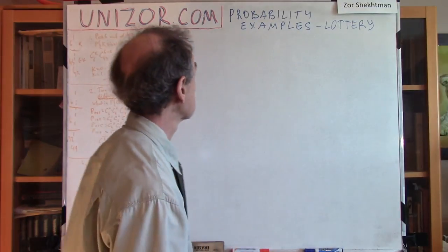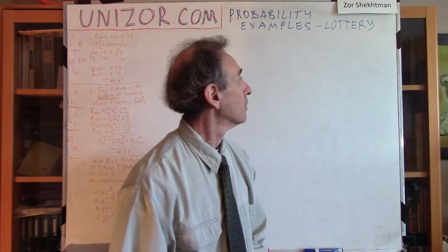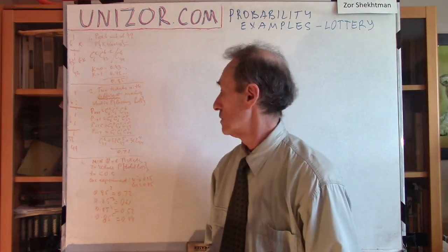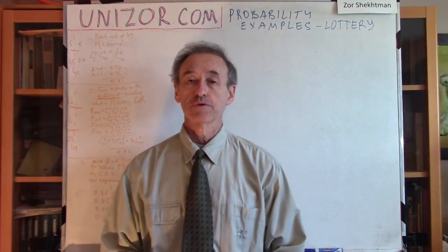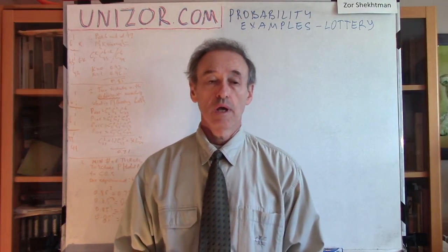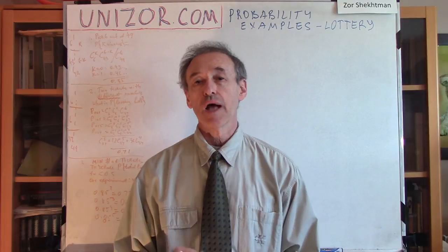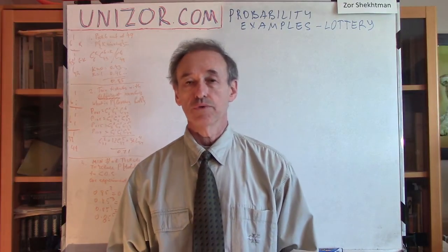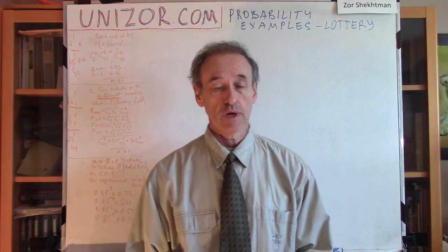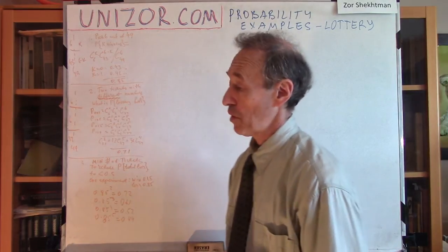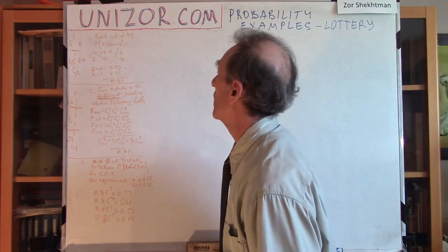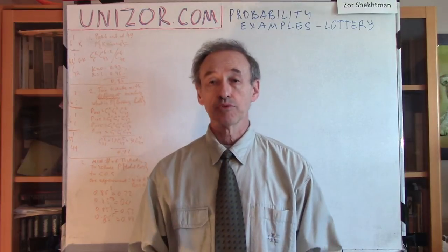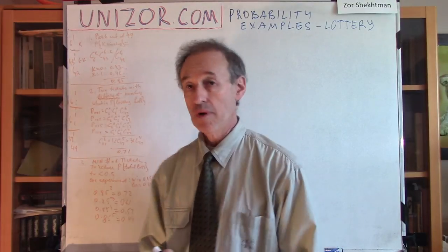So let's go to this particular lecture. We are talking about lottery. I have three different problems related to the lottery, and this is just an example of how probability can be used. I'm not going to go into all the intricacies of all the different lottery games. I will consider only one game: the rules are a random drawing of six numbers out of 49.